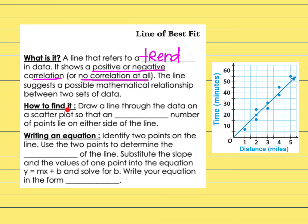So how to find your line of best fit. What you want to do is draw a line through the data on the scatter plot so that an equal number of points lie on both sides of the line. So the line we have right here, if you look at how many are above the line and then how many are below the line, it is equal. You want to try that as best you can.